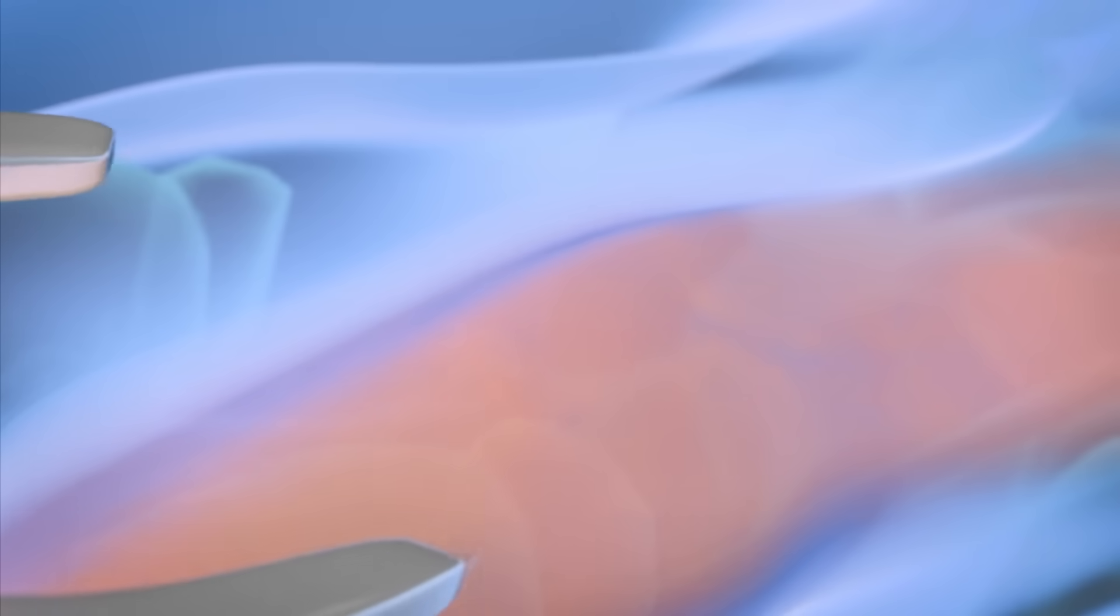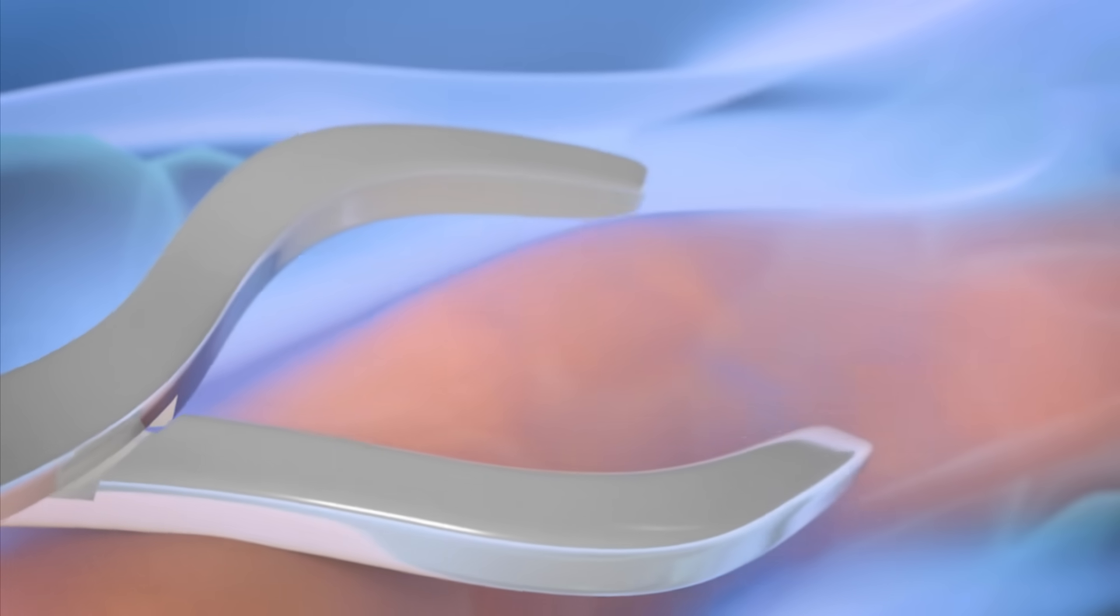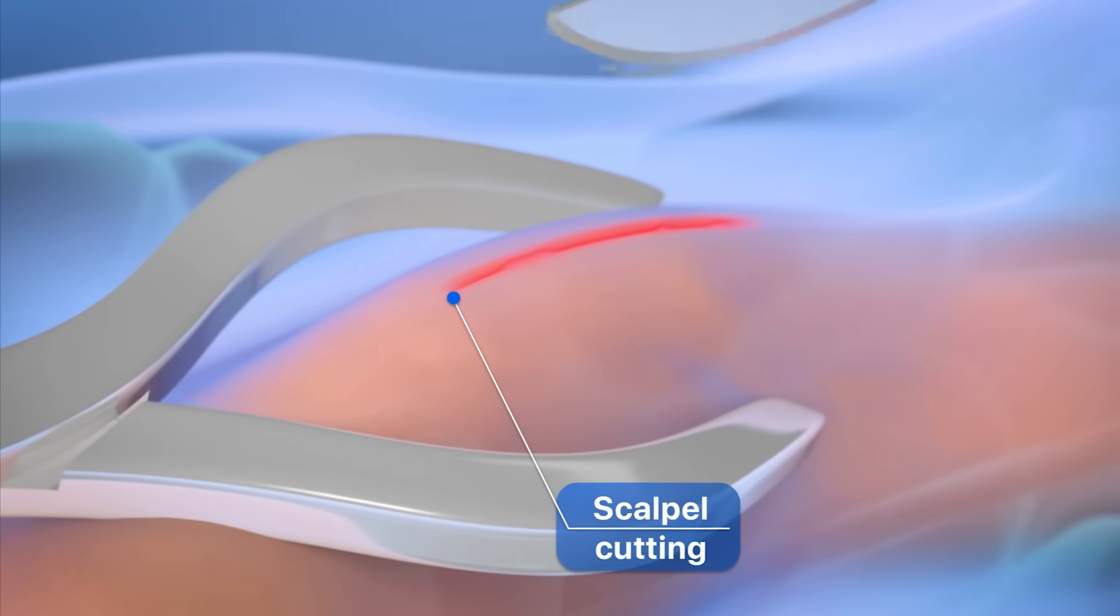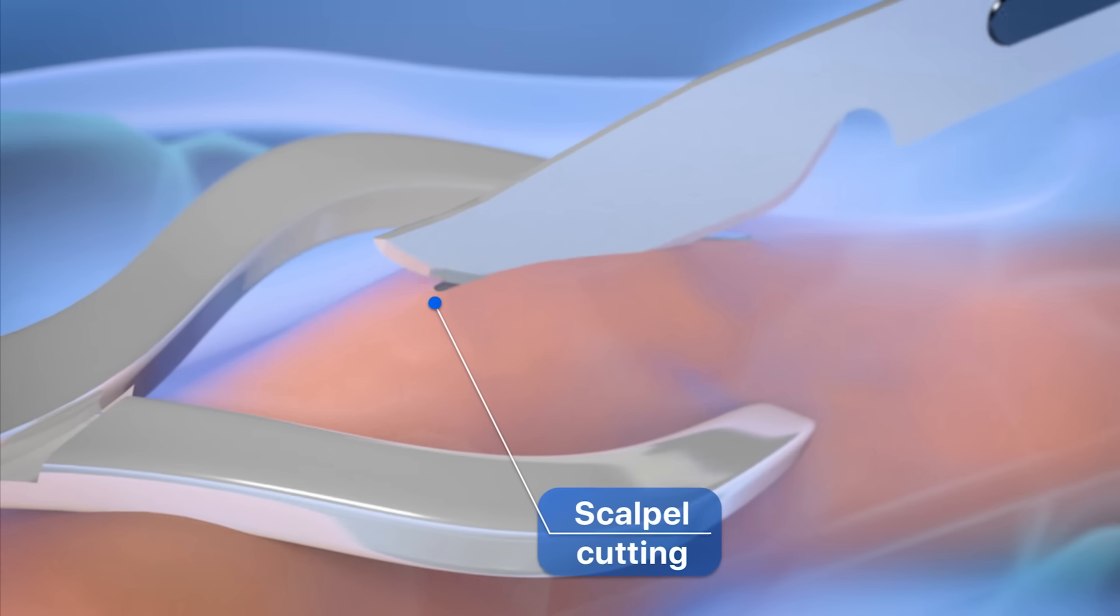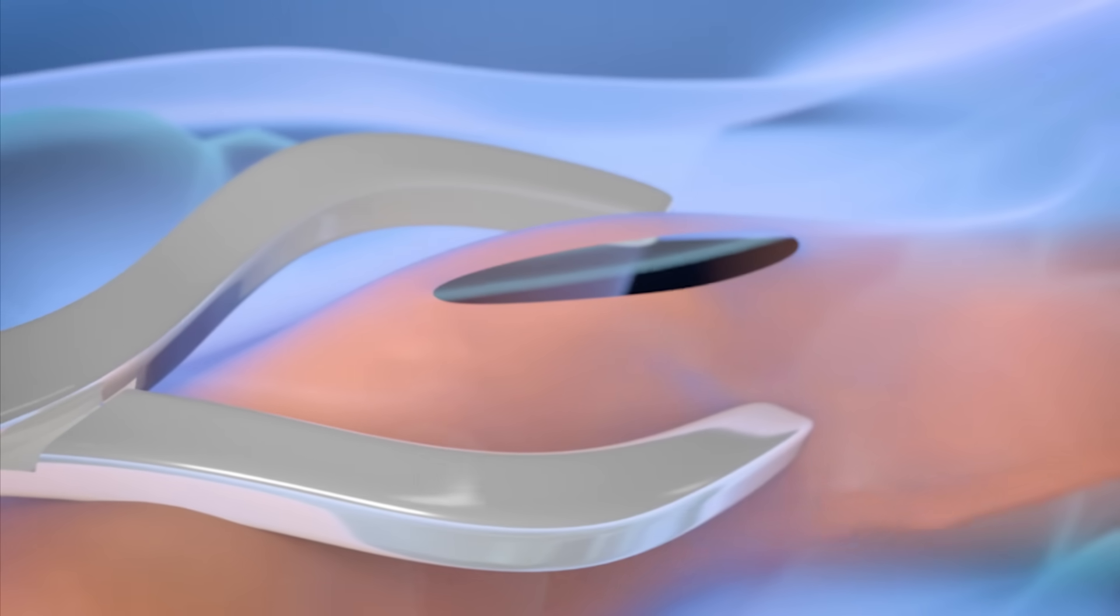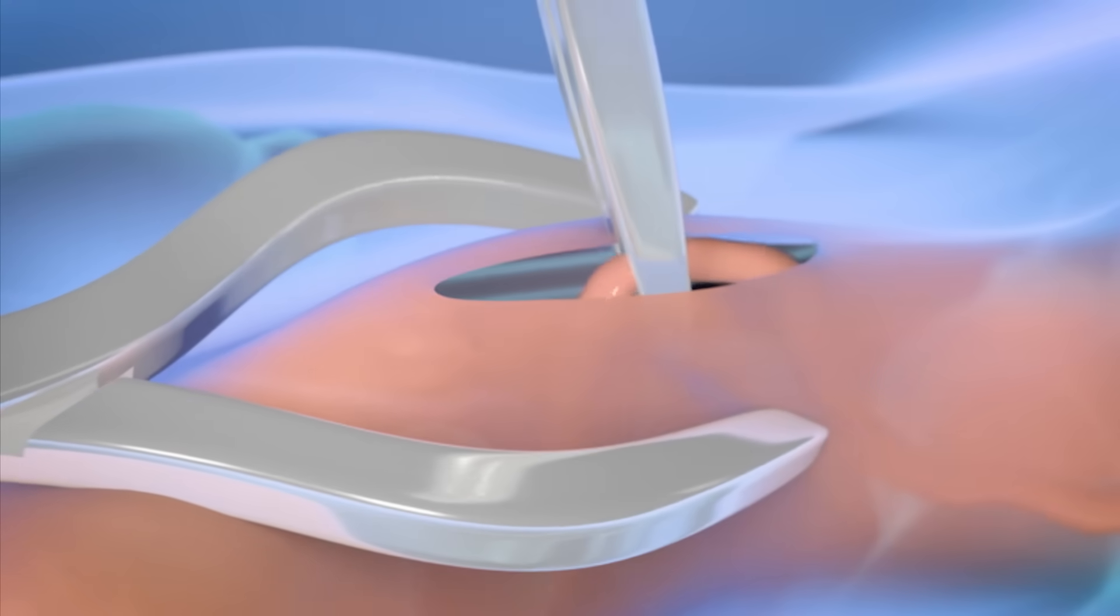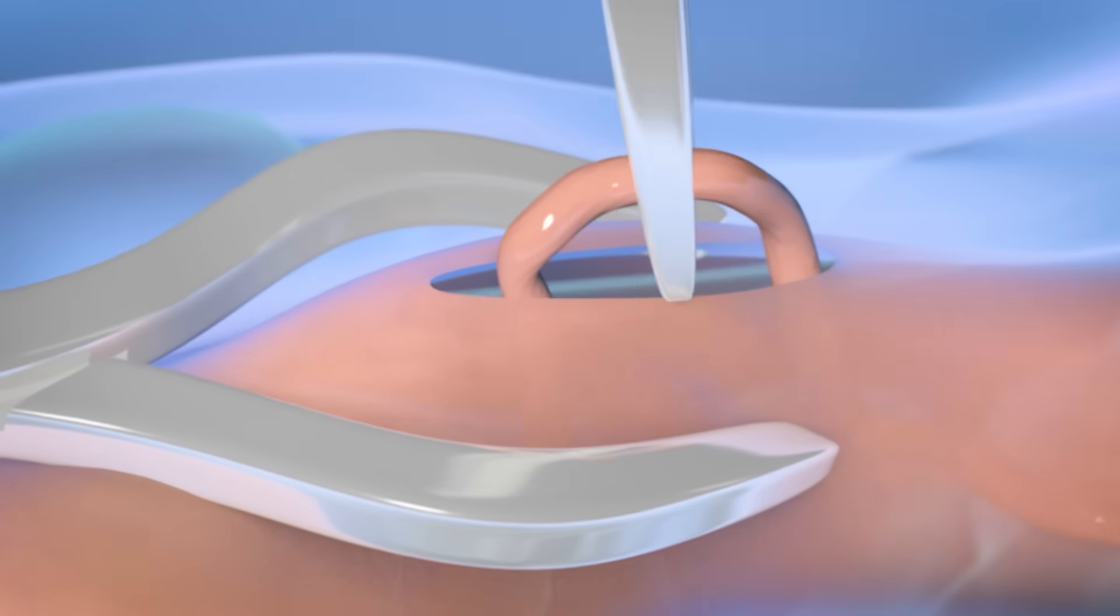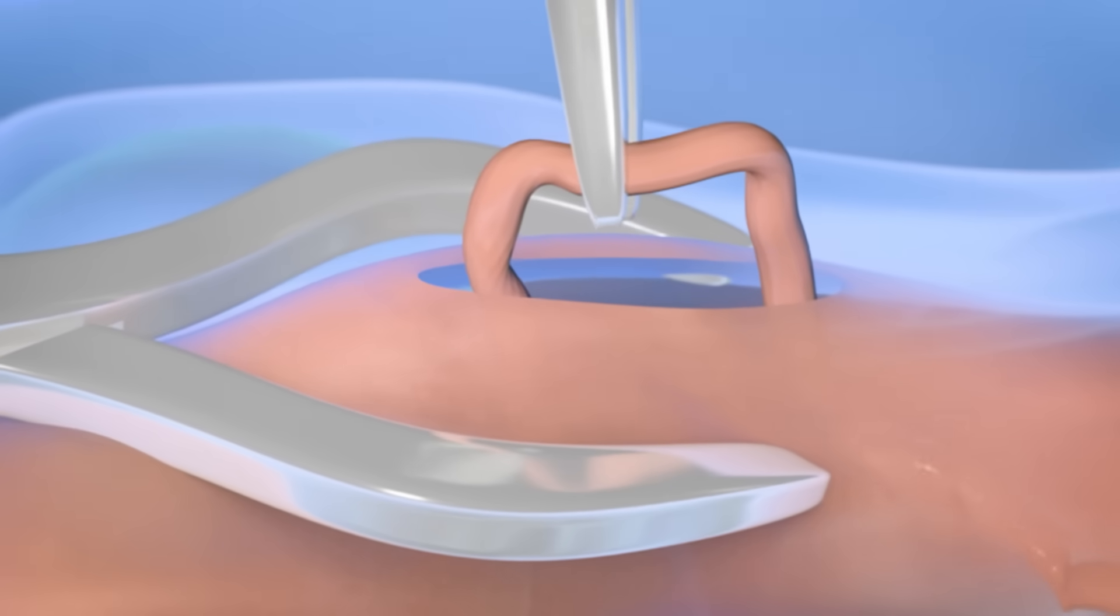In a conventional vasectomy a scalpel is used to make a small cut on the side of the scrotum, which is the bag of thin skin that contains the testicles. The doctor will locate the vas deferens and lift it through the cut made. At this time the patient may feel a slight pull.